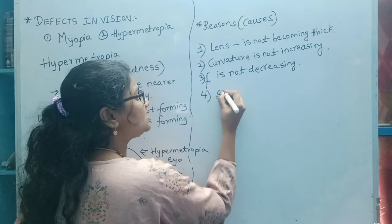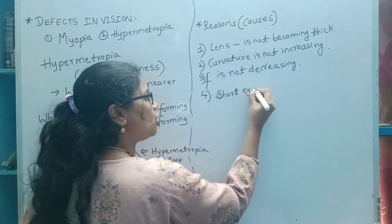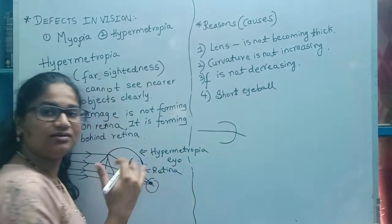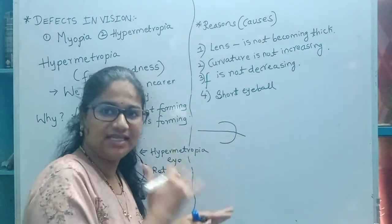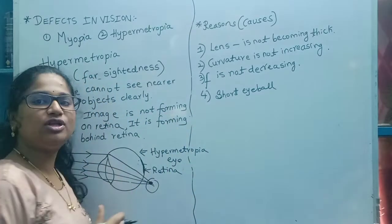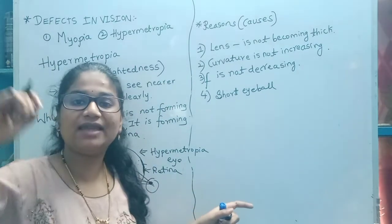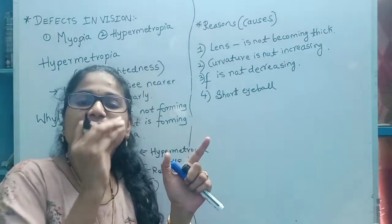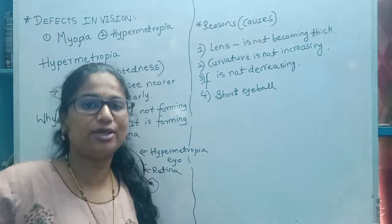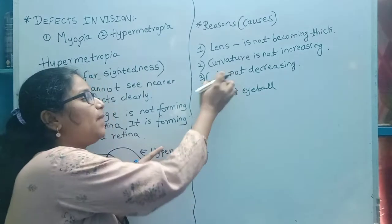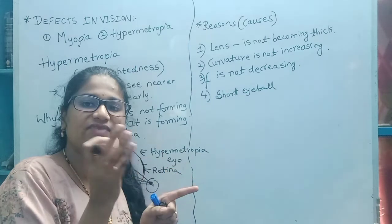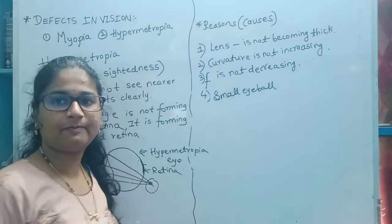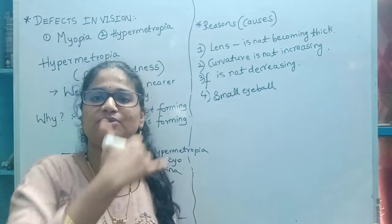There is one more cause: a small eyeball. If the eyeball is very small, the light rays may refract and meet beyond the retina. So a small eyeball is also a cause for hypermetropia. By comparison, an enlarged eyeball is a cause for myopia — the image forms before the retina. In hypermetropia, the eyeball might be very small, so the image is not formed on the retina but beyond it.